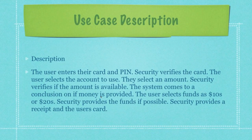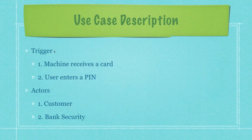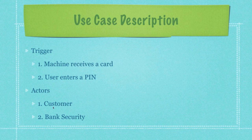Whenever you create a use case description, part of that is the description itself, which goes through all the different things your system will do — the user enters their card and PIN, security verifies the card, the user selects the account, and so on. You're also going to list a trigger, which is what happens before your system is triggered — for example, the machine receives a card. The system automatically starts as soon as a card goes into it, and that is the trigger. Then you list actors — the people outside your system boundary lines, which in this case are the customer and bank security.